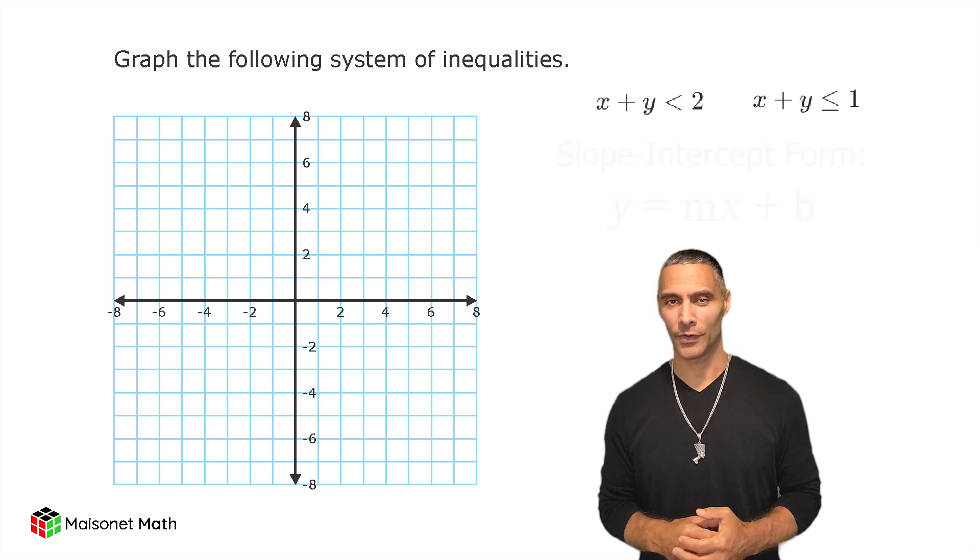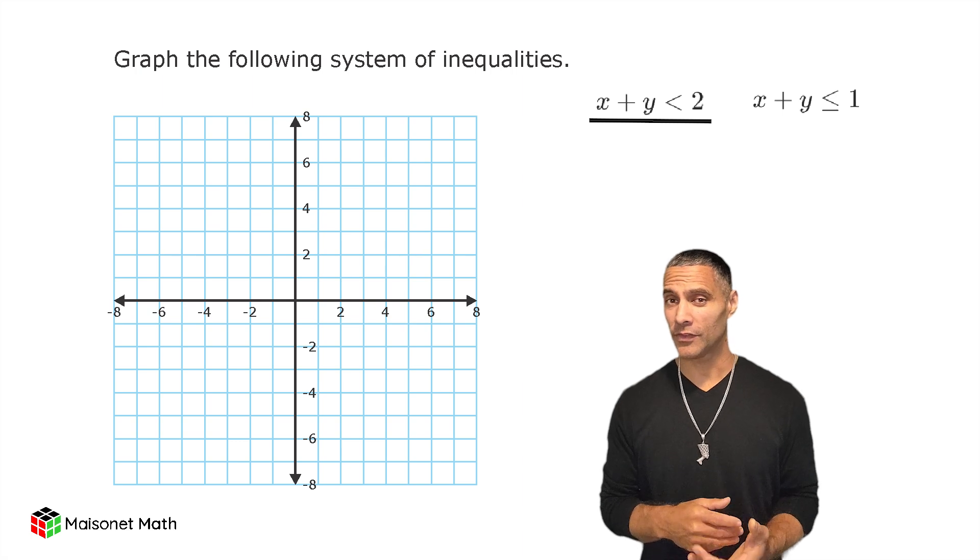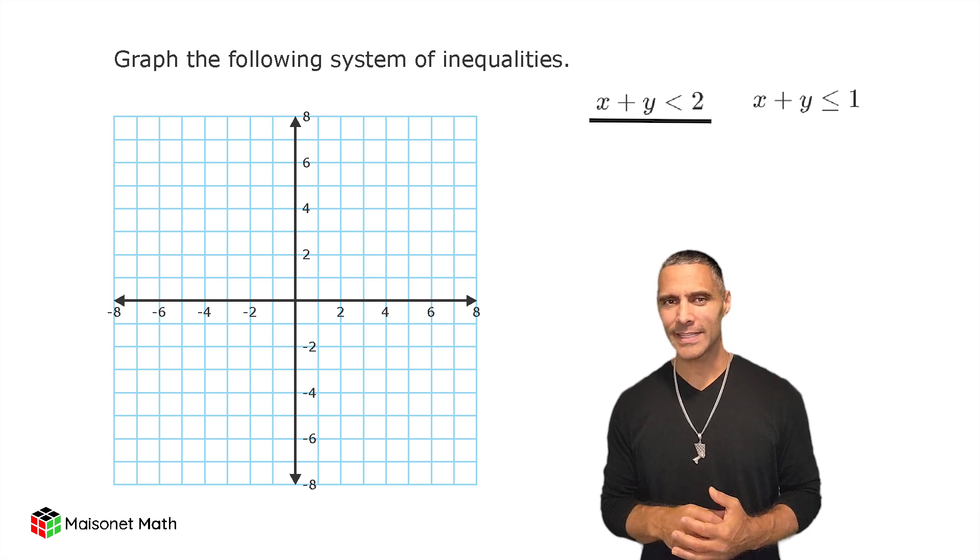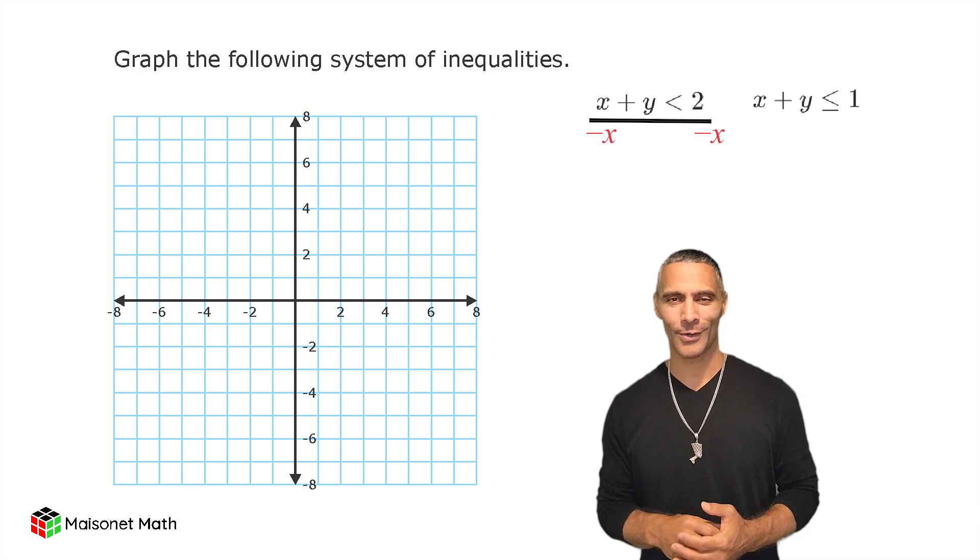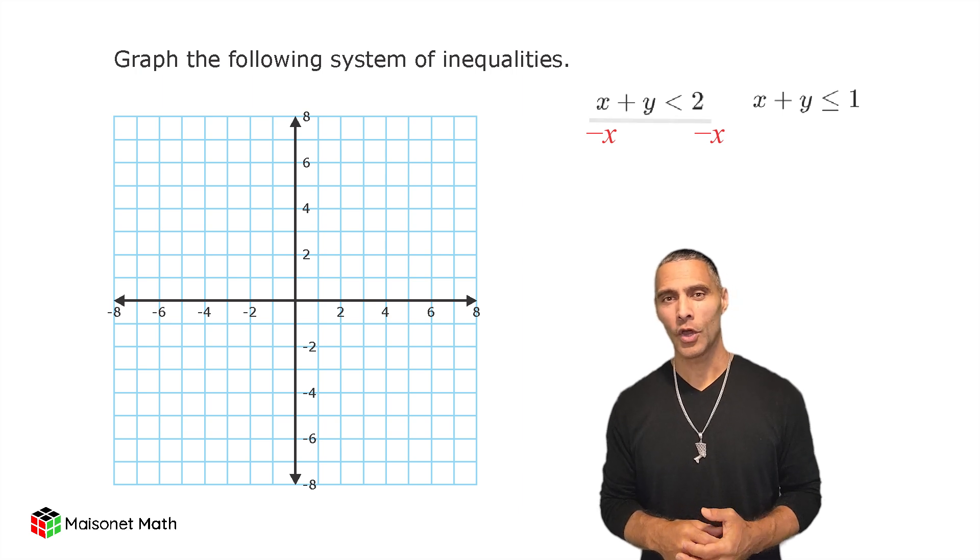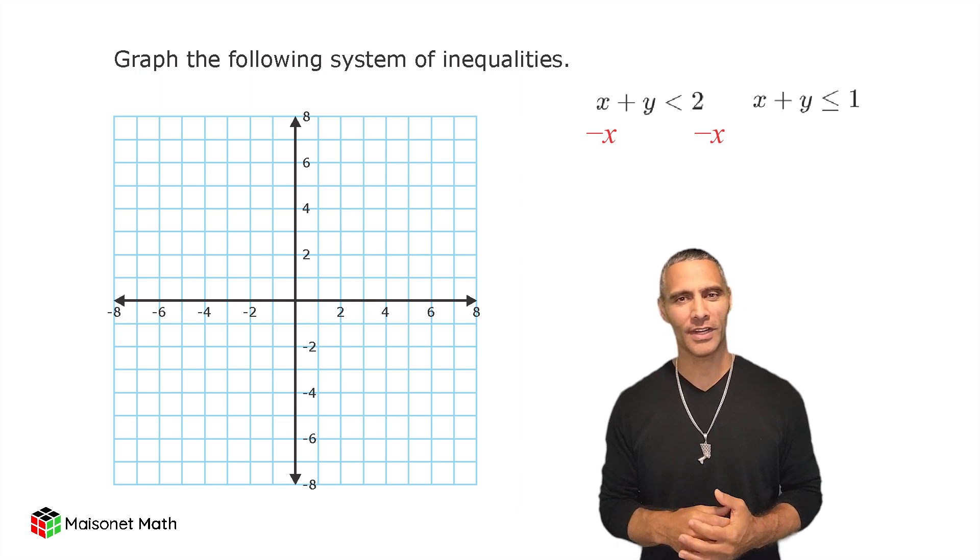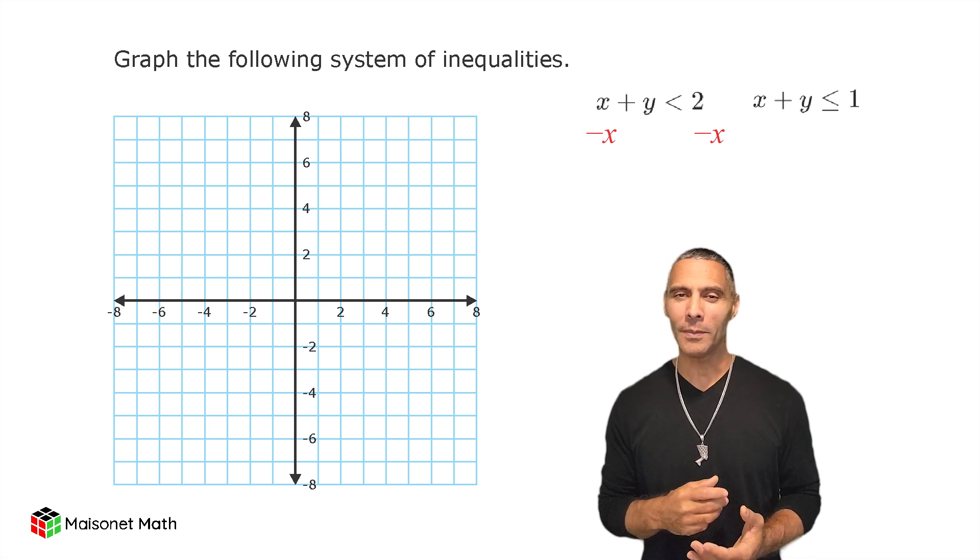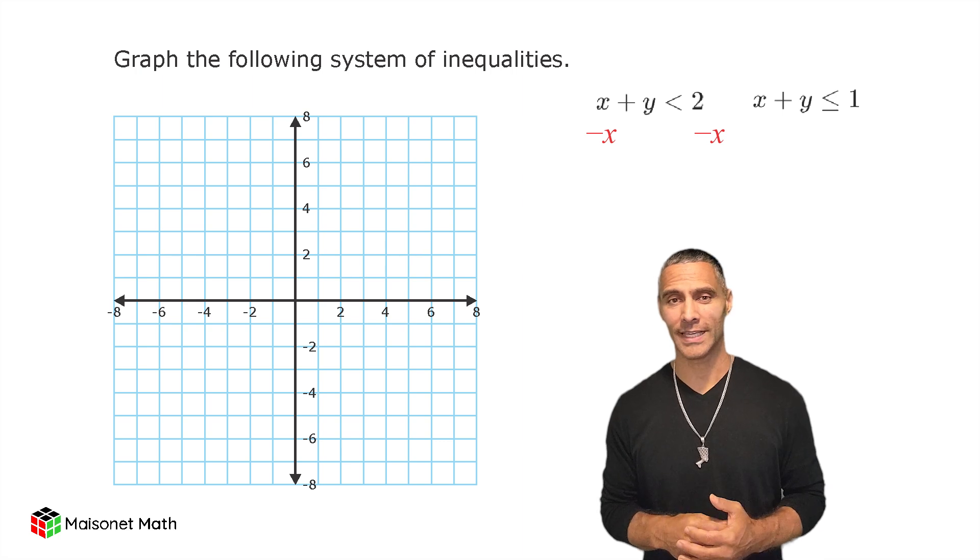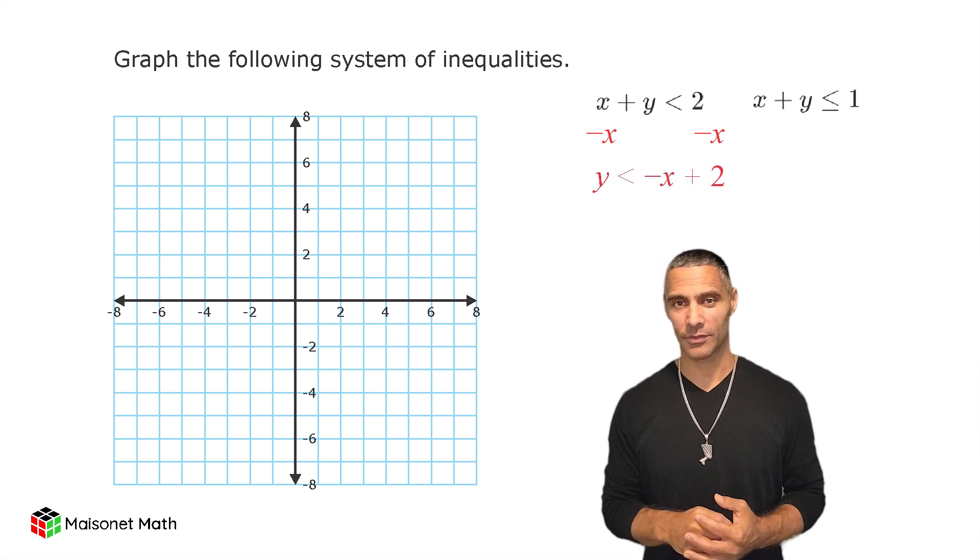Let us begin with the first inequality. First, we rewrite it in slope intercept form. To isolate y, move the x term to the other side with the constant. Remember, when you move a term across an inequality or equal sign, you change its sign. For the first inequality, we move the positive x to the other side of the inequality sign, resulting in y is less than negative x plus 2.